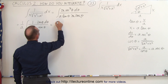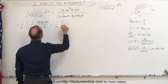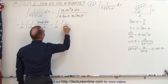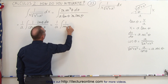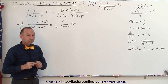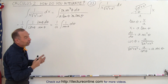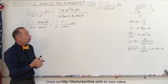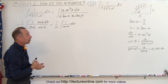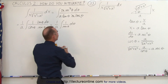Which means we now have 1 over a times the integral of 1 over the sine of theta dθ. And that looks deceivingly easy — you need a trick. The trick is to multiply both the numerator and the denominator by the sine of theta.